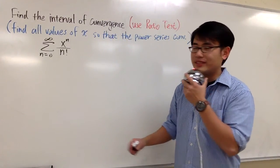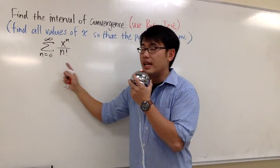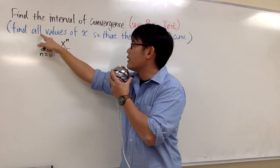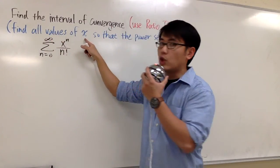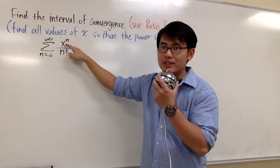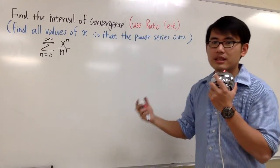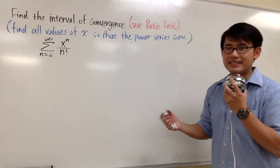We are going to find the interval of convergence of this power series. And remember, for the interval of convergence, it means that we are trying to find out for all the values of x so that I can plug it into this power series, into this x right here, and then this is going to produce a convergent series. That's the idea.